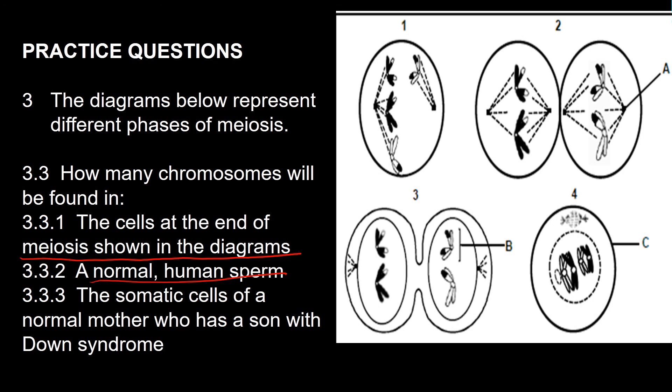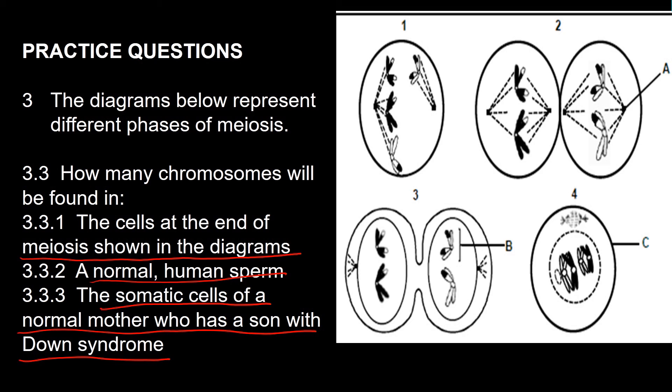A sperm — and I want to quickly discuss this one: the somatic cells of a normal mother who has a son with Down syndrome. What is a somatic cell? It's an ordinary body cell. Where are the problems associated with Down syndrome? Where do they occur? In the ovaries. So what will the normal mother be? She will have a normal number of chromosomes in all her cells — so she would have 46 chromosomes in each cell. I hope this has helped you a little bit. Don't be scared — remember there are always some straightforward questions, so if you know what the different parts are called you will always be able to get some marks. I wish you well in the exams, bye!